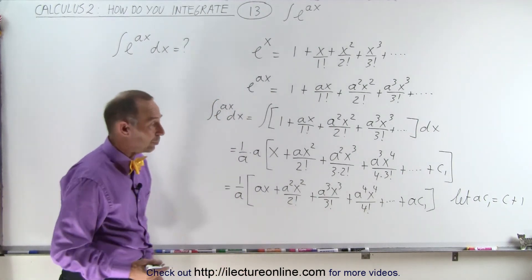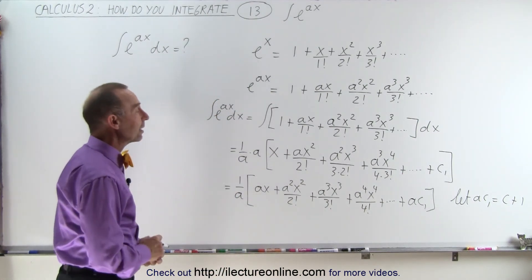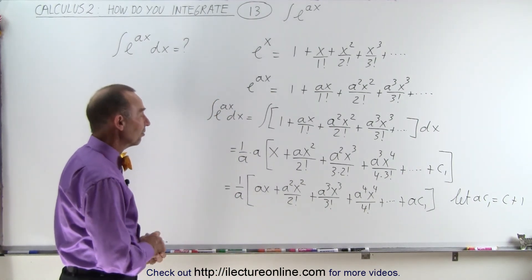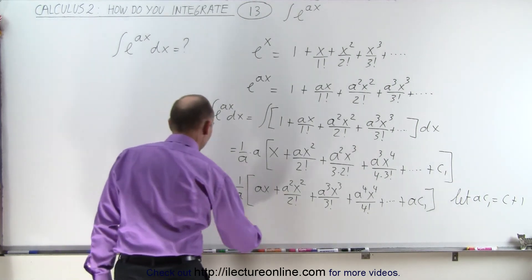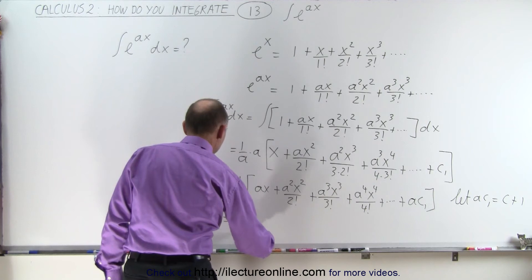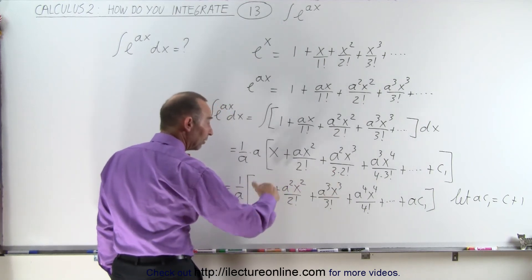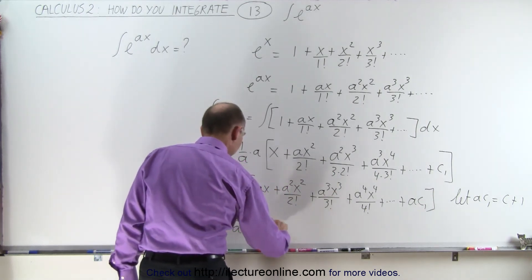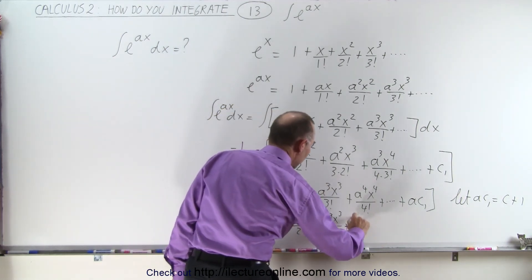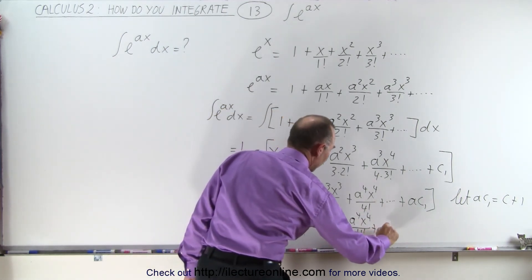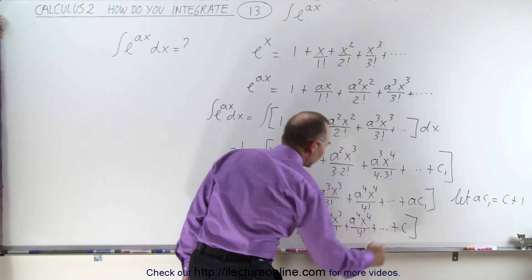I can do that. I can make it into any constant because c can be any constant, a can be any constant, and c1 can be any constant. So when I do that, I can rewrite this as 1 over a times—I can write the 1 in the front—1 plus ax plus, and in the end, simply a constant of integration.